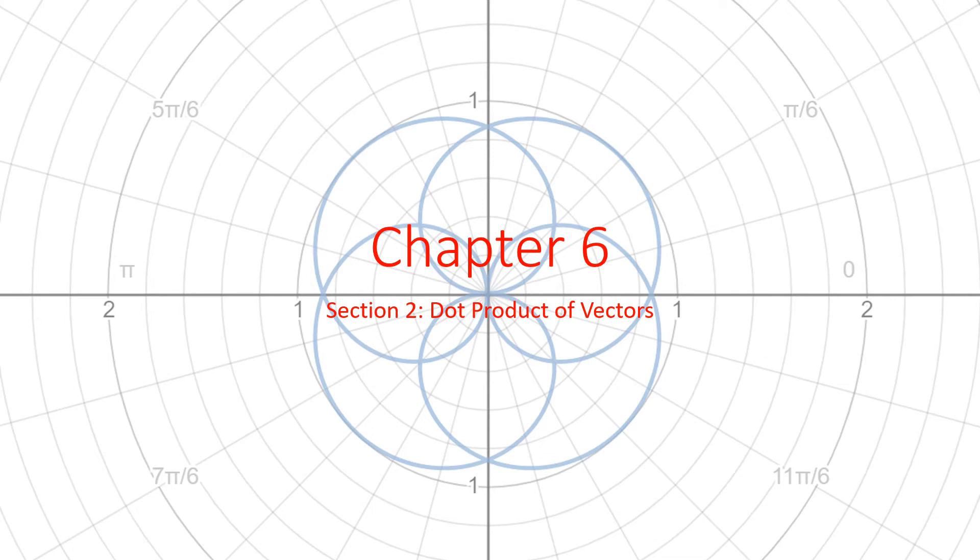Welcome back to section two of chapter six. In this section we are going to continue looking at vectors. This won't have as many topics as that first section did, but they're a little bit tougher. The projections are a little bit tougher, but it uses a lot of what we saw in that first section. But we're going to be looking at the dot product of vectors. A dot product is one of the ways that we can multiply two vectors together, and it has some applications that we will see.